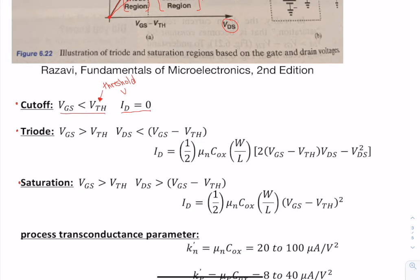For triode and saturation, you therefore have to have the transistor on, which is when you have the channel start. So that VGS needs to be greater than VTH. And then the comparison is going to be between VDS and VGS minus VT.